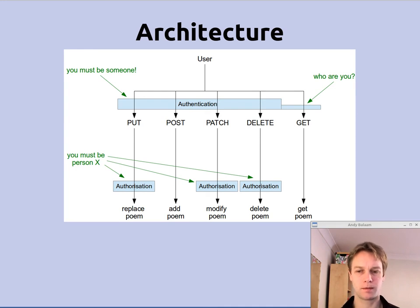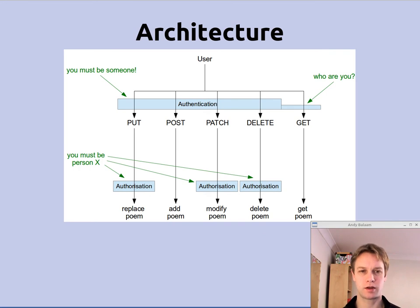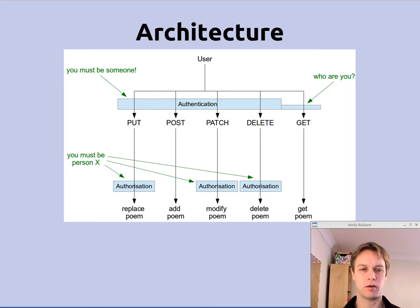We have a number of different actions we can do through our REST API: PUT, POST, PATCH, DELETE, and GET, which we covered in previous videos. You'll notice that different actions go through different security layers. All the actions like PUT, POST, PATCH, and DELETE — everything except GET — goes through a thick authentication layer near the top. In order to do any of those actions, you have to be a logged-in person that we know who you are, because those actions are modifying poems or making new poems.